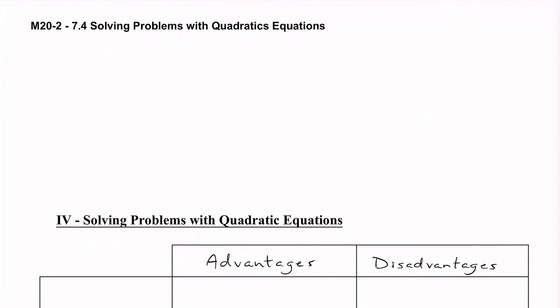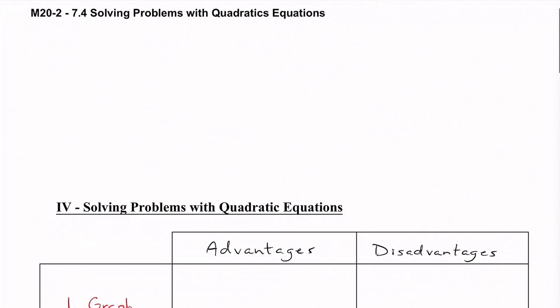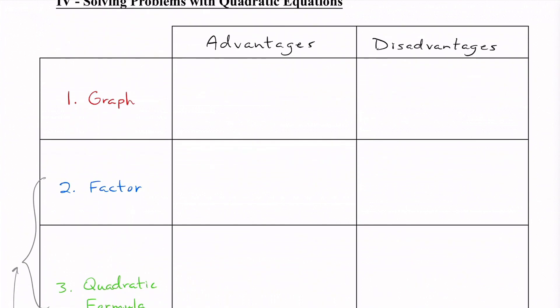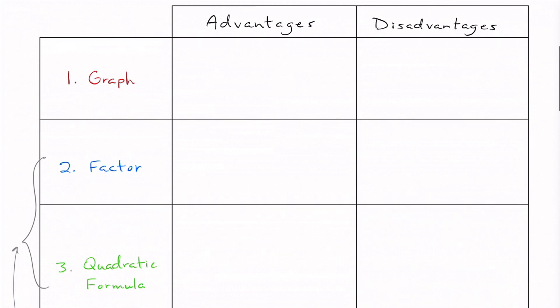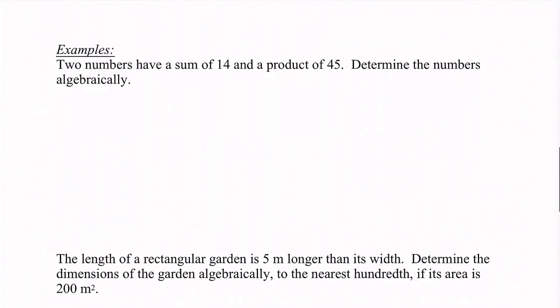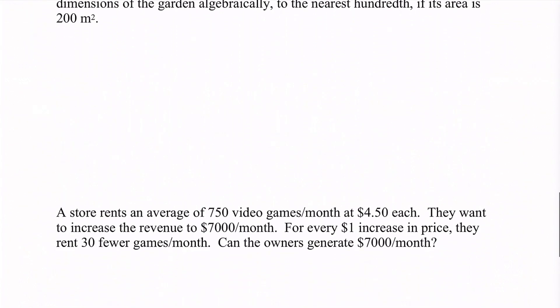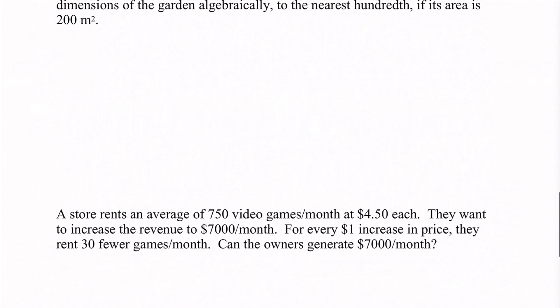Hello everyone. In this video we're going to be looking at section 7.4, Solving Problems with Quadratic Equations. We're going to be splitting it up into two parts — this is going to be part A, and then I'll have a second part, part B. In this part we're going to look at some advantages and disadvantages for ways to solve quadratic equations, so either graphing, factoring, or using the quadratic formula — those are all the ways that we have done so far. We are going to do some examples as well. Let's get into it.